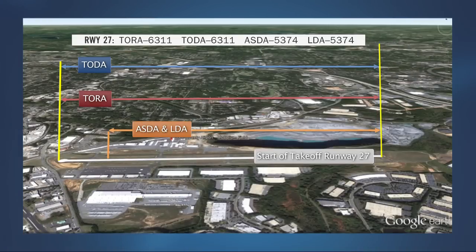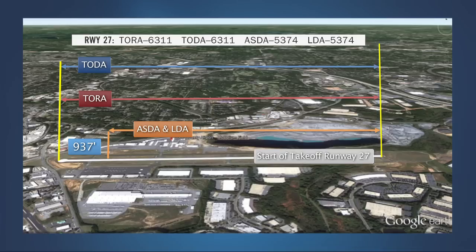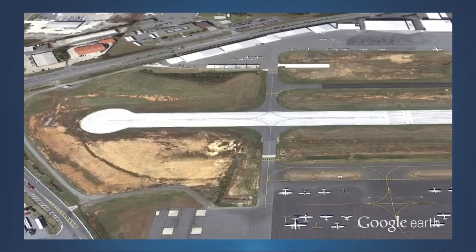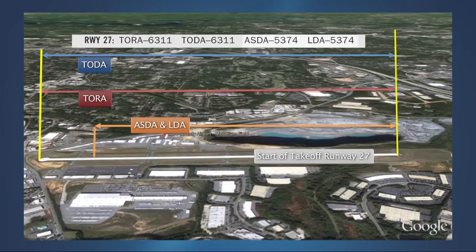As you can see, the Cobb County-McCollum Airport's runway 27 has a physical length of 6,311 feet. However, both the declared accelerate stop distance and the landing distance available are 5,374 feet — 937 feet shorter than the physical runway length. There is no displaced threshold on runway 27, so some pilots may wonder why these distances are reduced. The last 937 feet of runway 27 is used to satisfy the requirement for a 1,000-foot runway safety area. The application of declared distances is intended to ensure that the airplane has the capability of stopping during the landing maneuver or in the event of a rejected takeoff before intruding into the runway safety area. For this reason, the declared accelerate stop distance available and the landing distance available are less than the physical length of the runway.